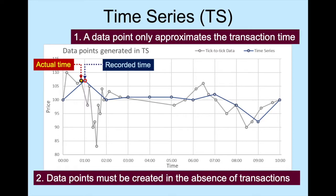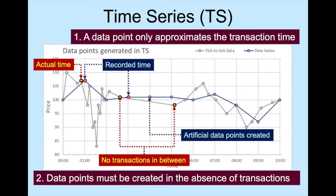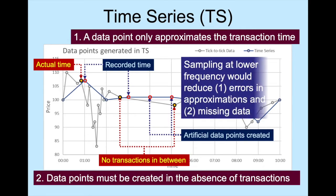For example, there is no transaction between these two. So, after the first data point is recorded, artificial prices must be created. In this example, we simply record the previous price. In a daily closing price series, if the final transaction took place 5 seconds before the market closes, then the error introduced by this time approximation is only 0.006%, which is insignificant.